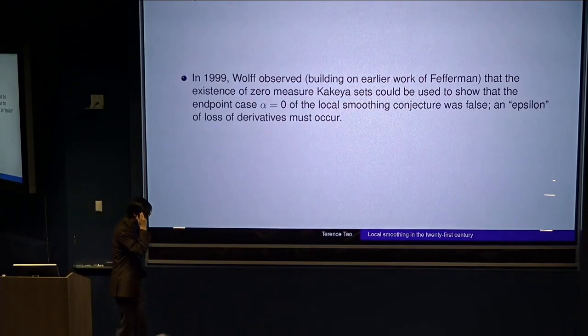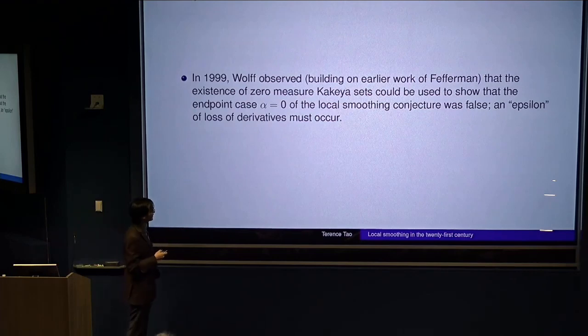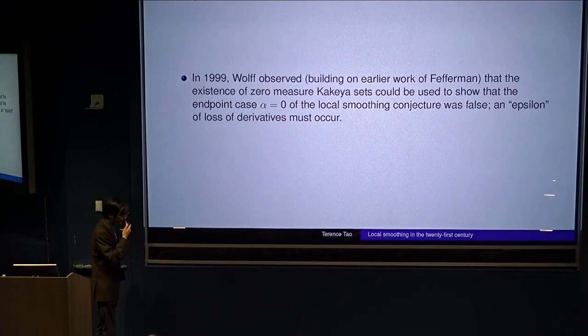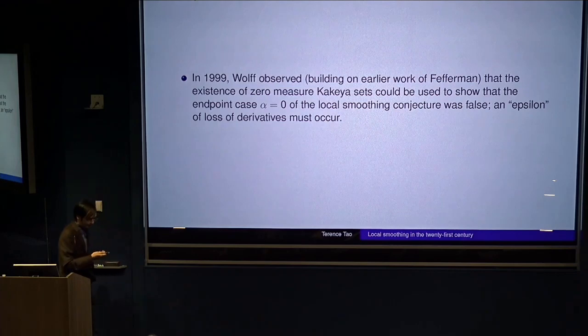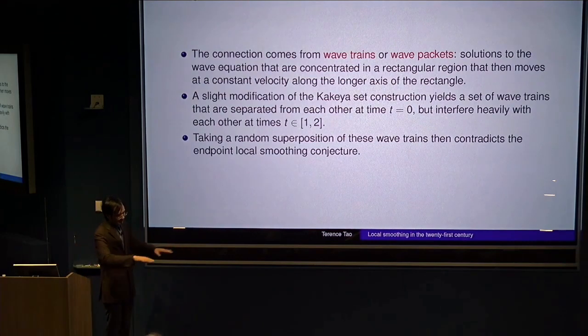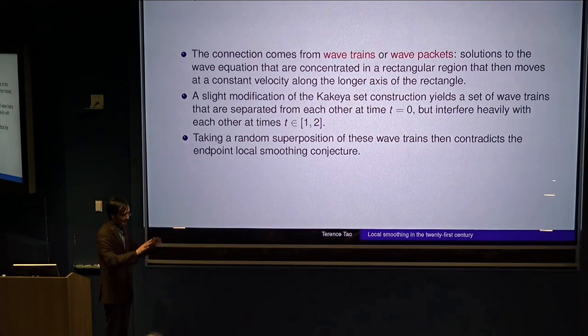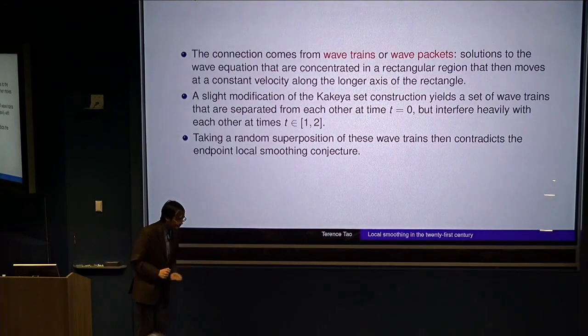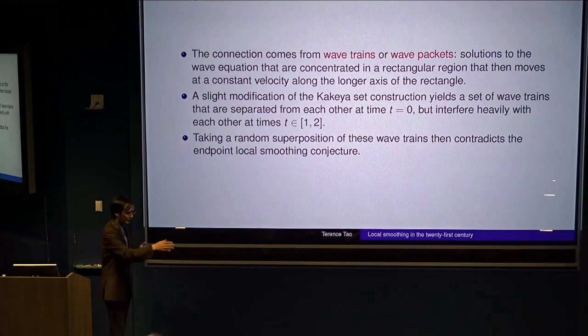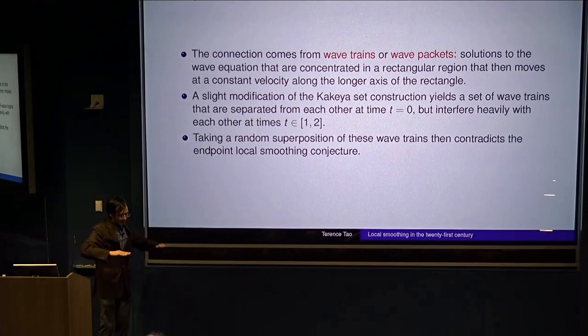And these turn out to be connected to local smoothing. So, for example, there's this little epsilon loss of derivatives in this conjecture. And you could be really optimistic and say that maybe there's no loss of derivatives at all. Maybe the conjecture is true with alpha equals zero. But it was shown by Tom Wolff in 99 that this doesn't happen because of these Kakeya sets. And why is there a connection? It's because of things called wave trains.